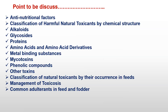The definition of anti-nutritional factors, classification of natural toxicants based on chemical structure — this is the first classification. The second classification is based on the natural toxicant by occurrence in the field. So generally there are two types of classification for toxic principles.